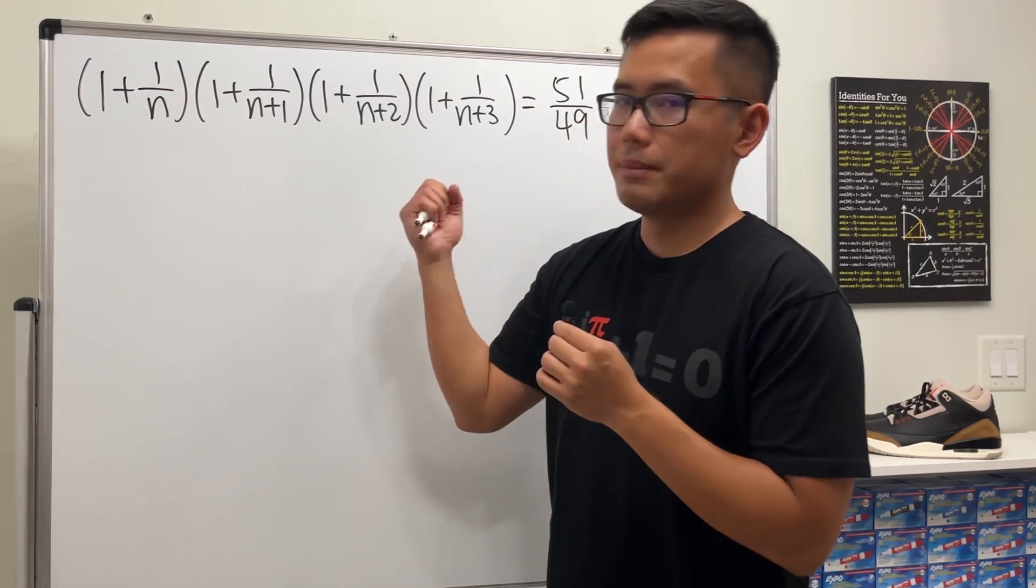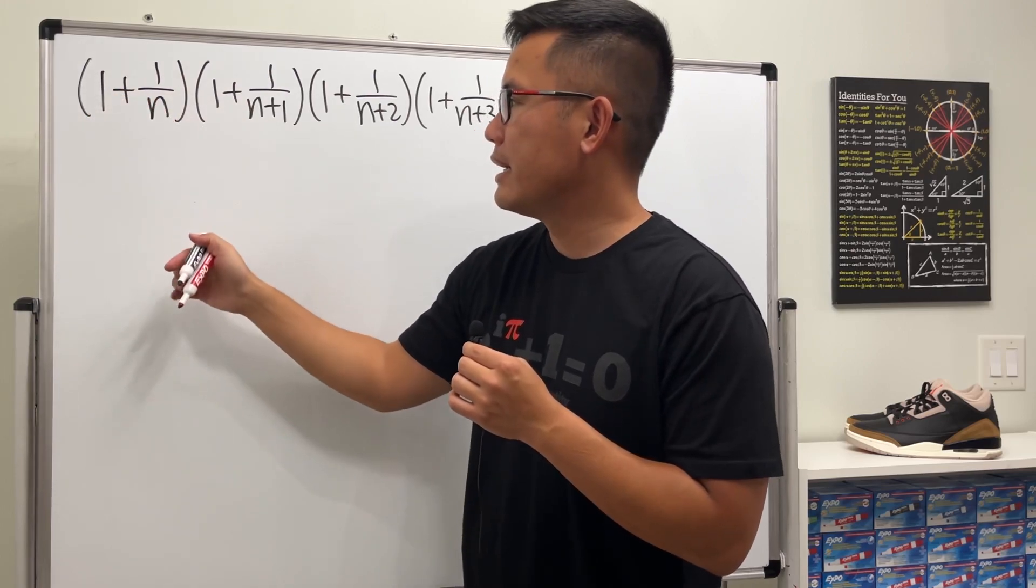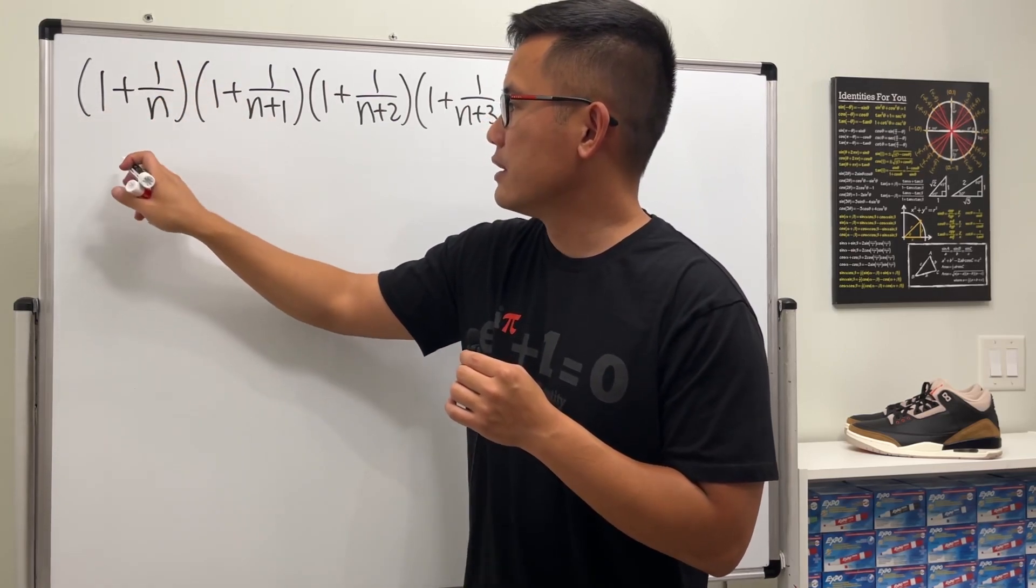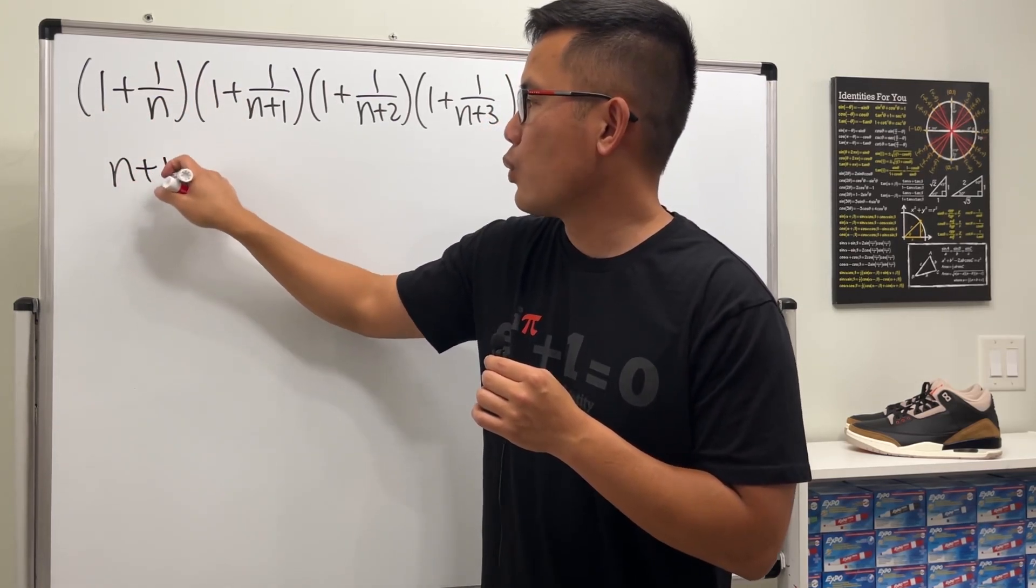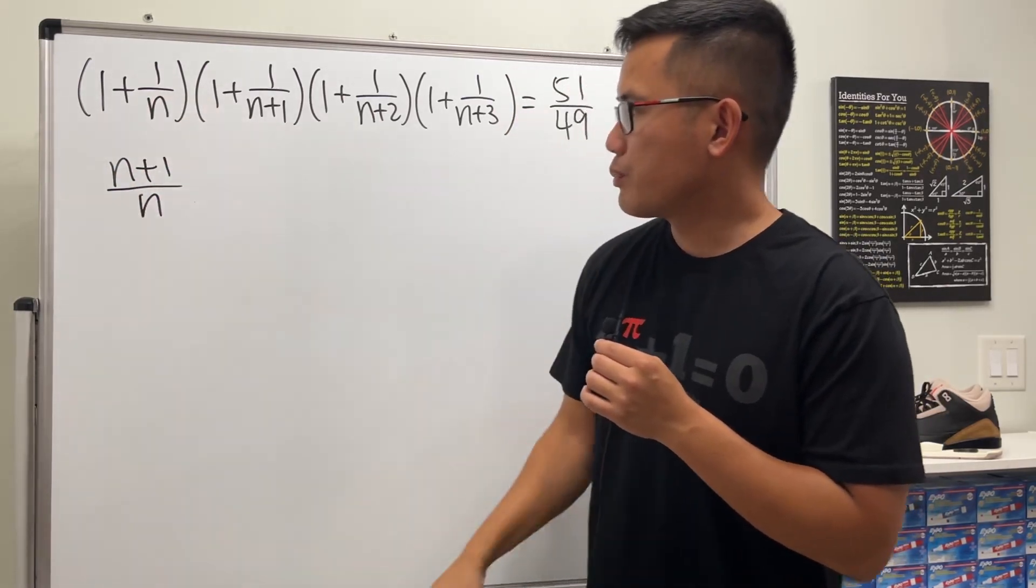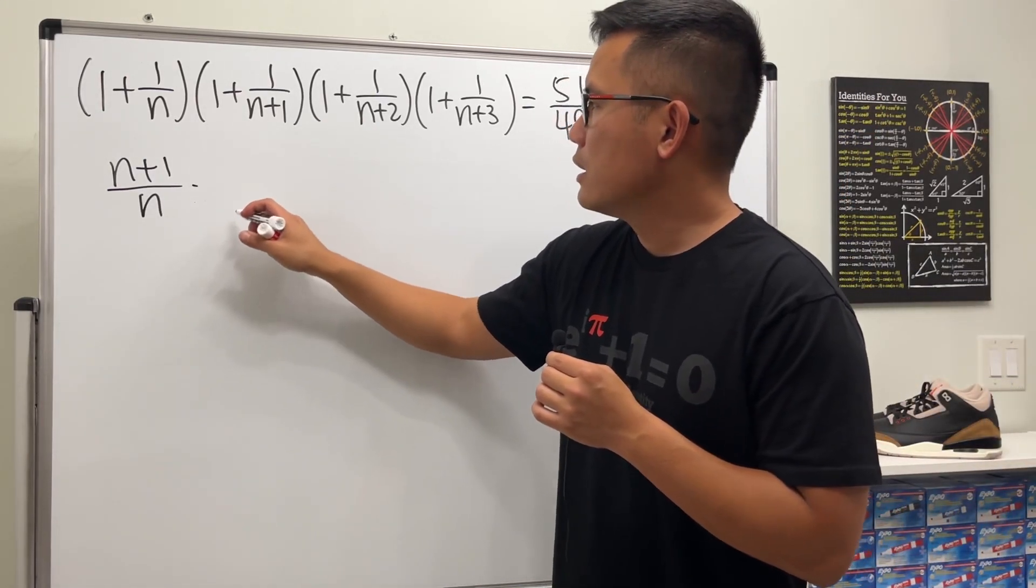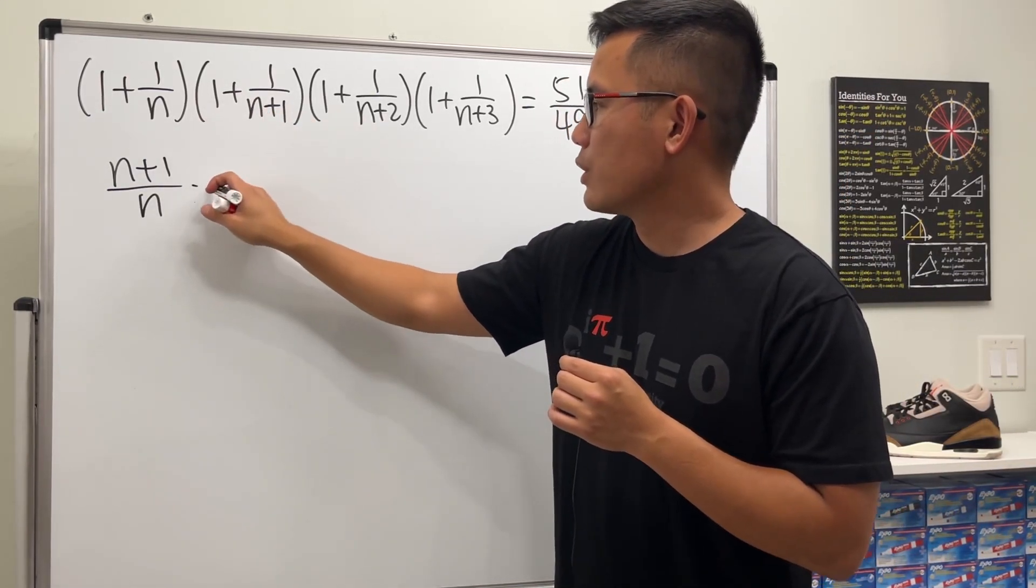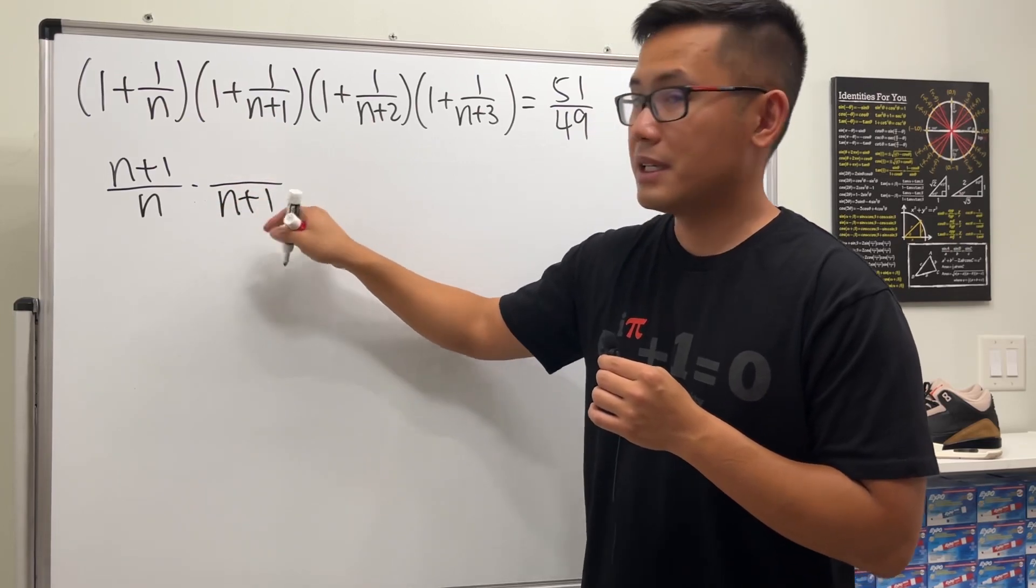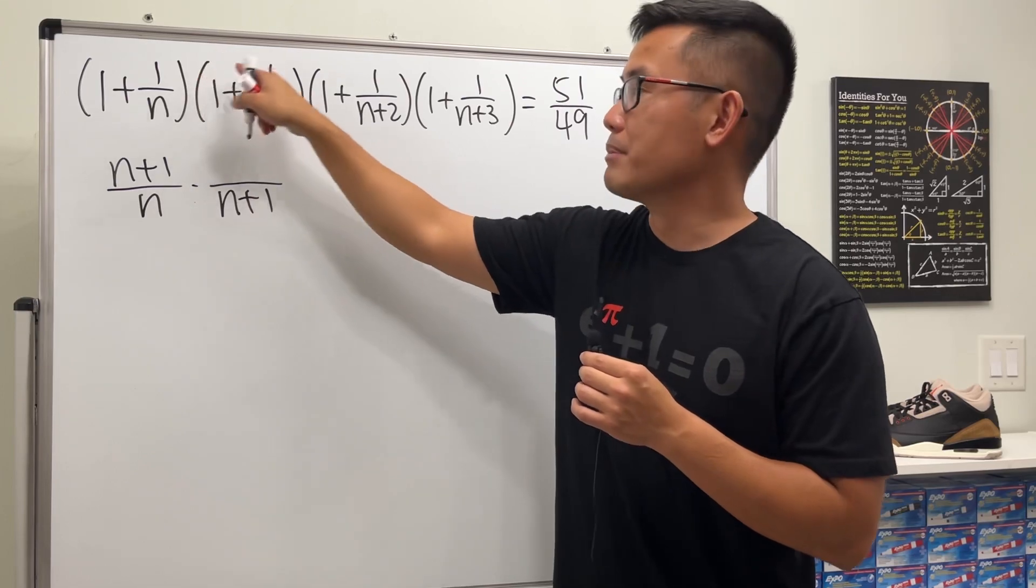For the first one, we'll multiply the top and bottom by n. So this right here is the same as (n+1)/n. That's the result for the first parentheses. Then for the second one, get a common denominator. We'll have (n+1) plus 1, so (n+2)/(n+1).